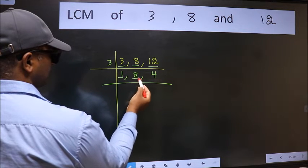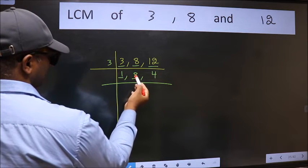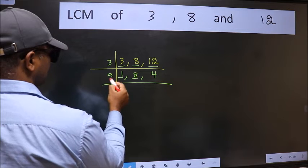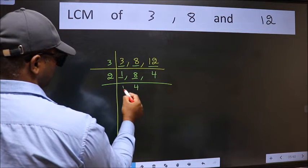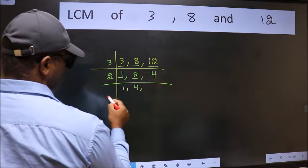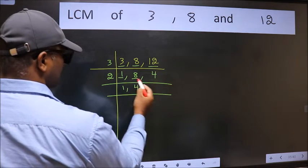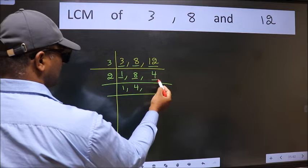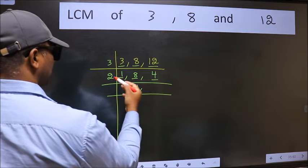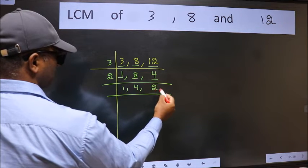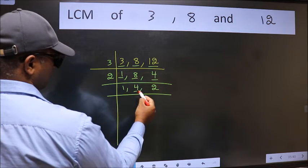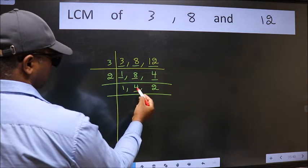So focus on to the next number 8. 8 is 2 fours — 2 times 4 is 8. The other number 4 — when do we get 4 in the 2 table? 2 twos are 4. Now here we have 4.